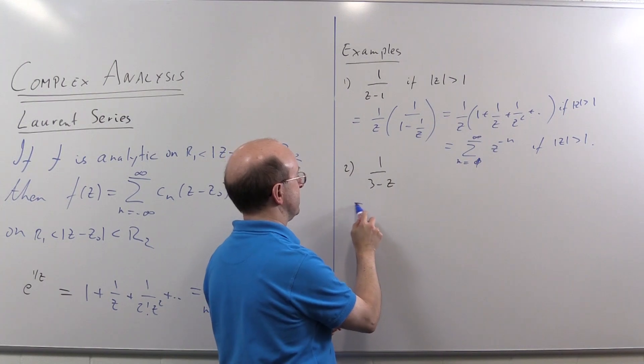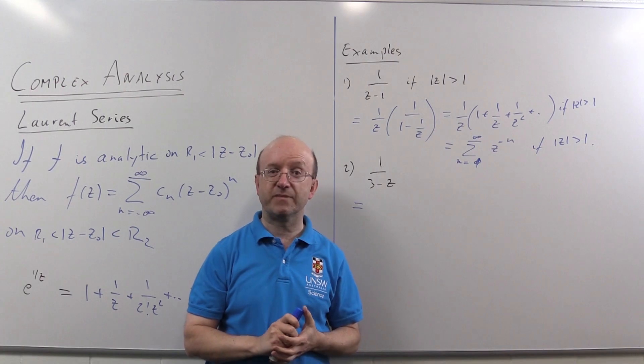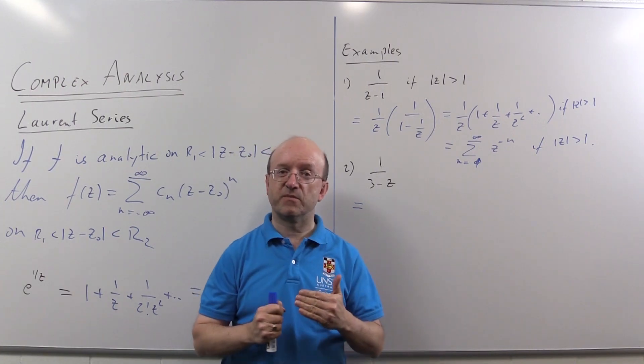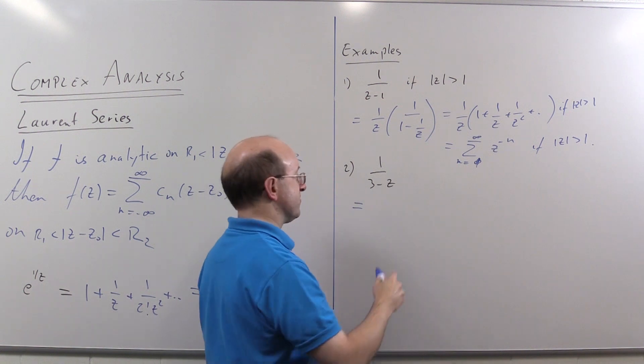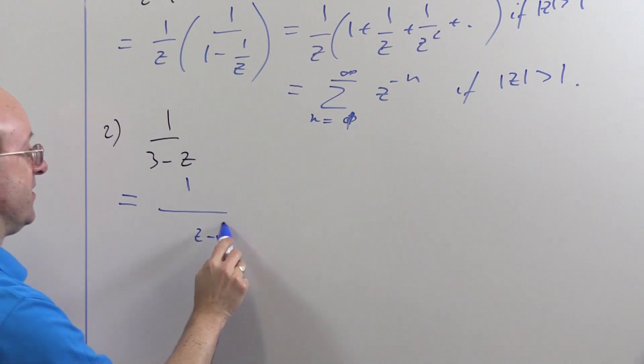To get us a power series in powers of z minus one valid for |z minus one| bigger than two. Remember in the previous video we looked at the series for |z minus one| less than two, so it's the same trick as before. We rewrite this thing here in terms of z minus one, and that's what that would look like.